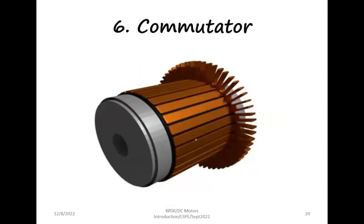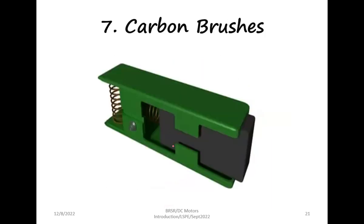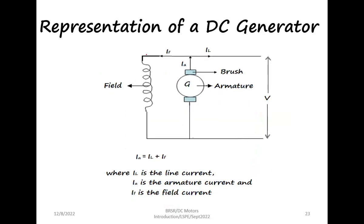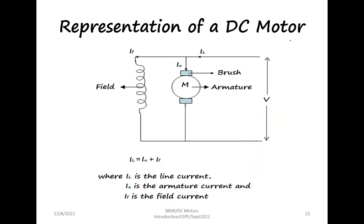The ends of these coils are brought to the part called the commutator. From the commutator, if it is a motor, the current is given to the machine; if it is a generator, the current is taken out through a part called the brushes. These are the major parts of a DC machine. The representation of a DC motor and a DC generator is shown here for a DC shunt machine, where the field and armature are connected in parallel — it is called a shunt machine.